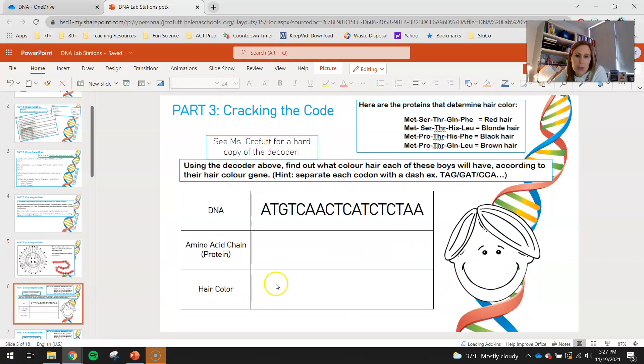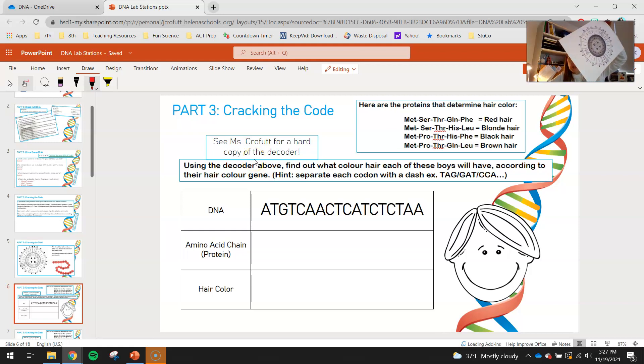What you guys will be doing is you will have three little individuals where you guys are going to figure out what their hair color is based on their DNA. So first, what you guys will do is you'll grab your draw tool. Again, you see me for your hard copy if you guys want to use this decoder ring in a much bigger fashion.